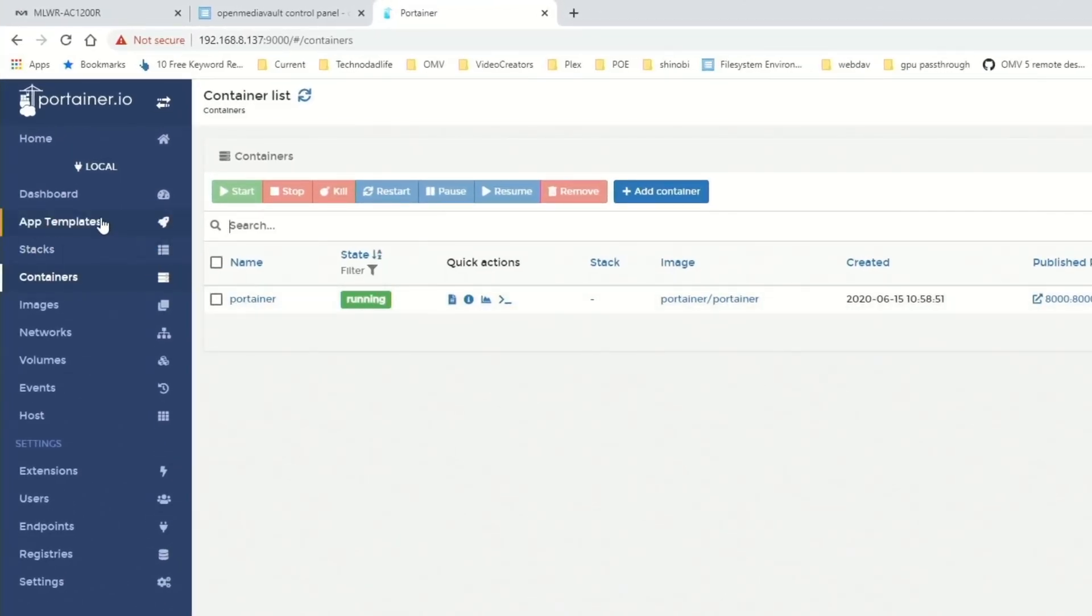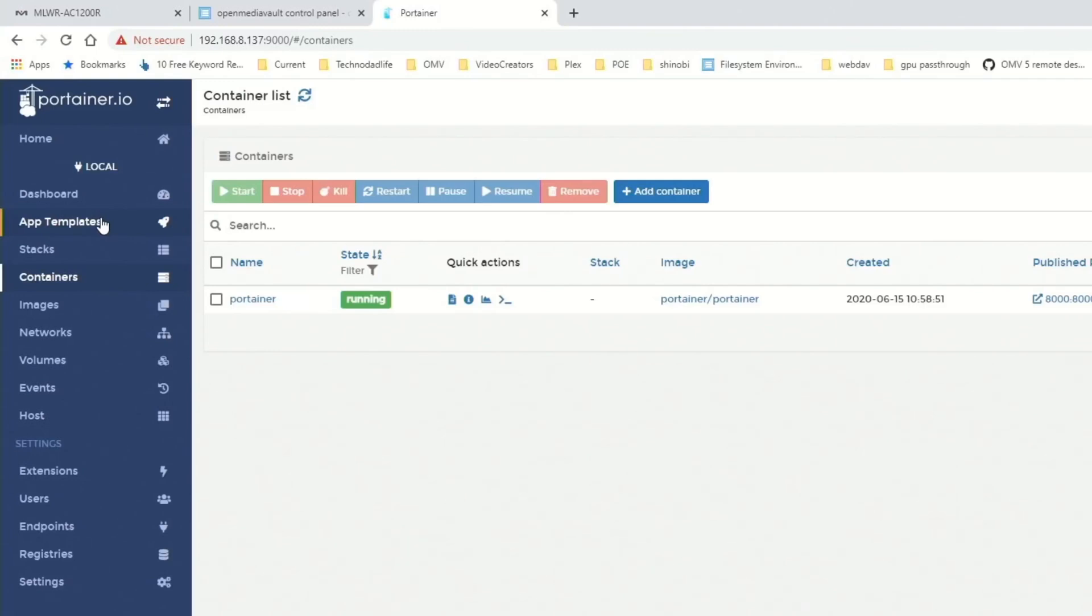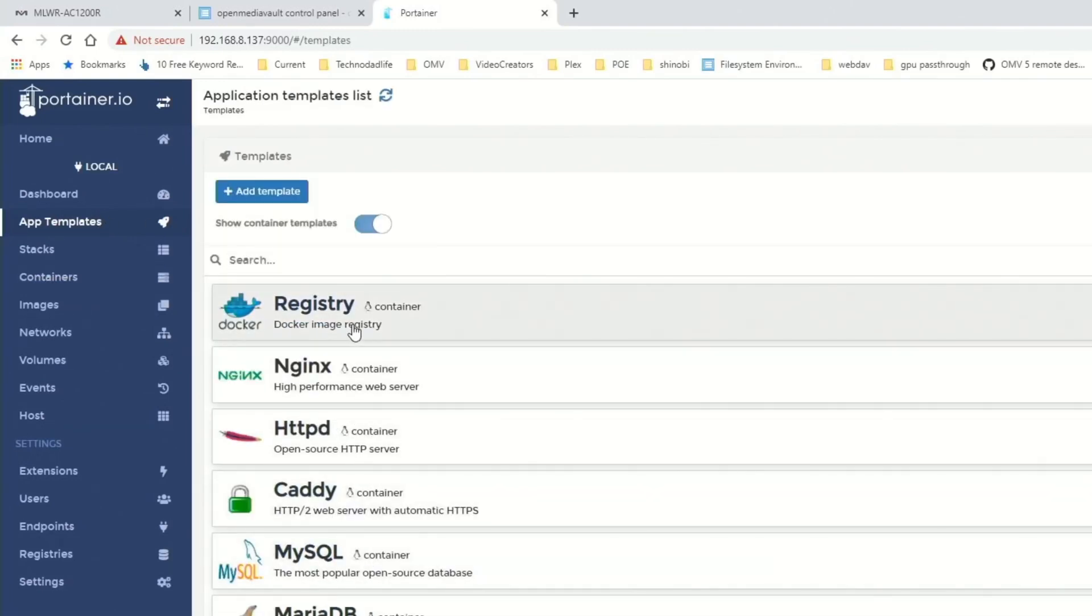Now we're going to click on App Templates. And here you see we don't have any App Templates for the ones that we just installed. So we're going to go down to Settings.